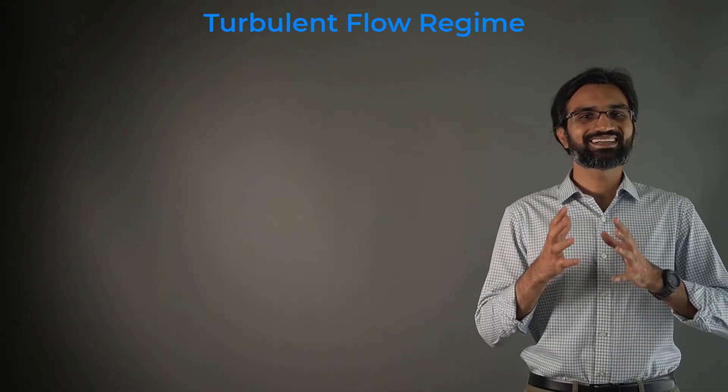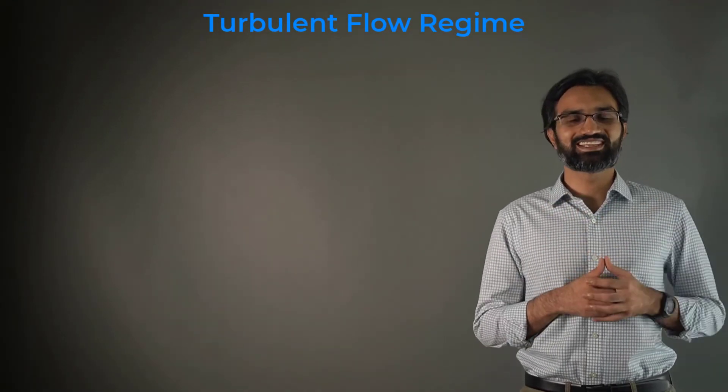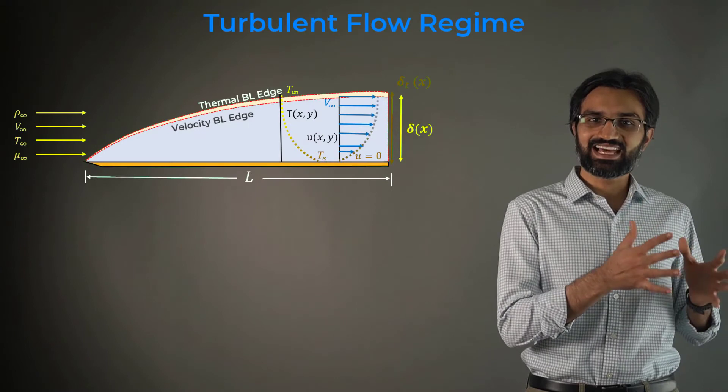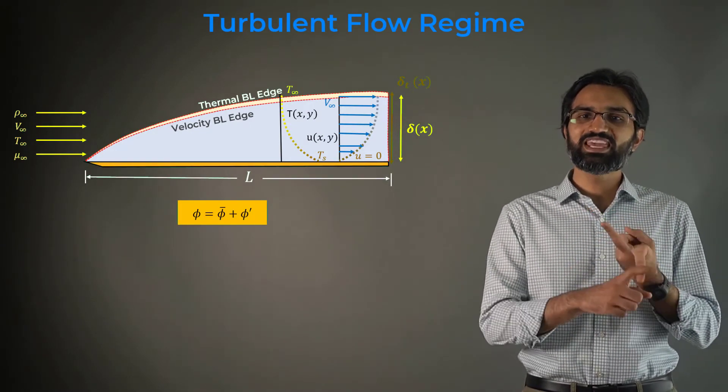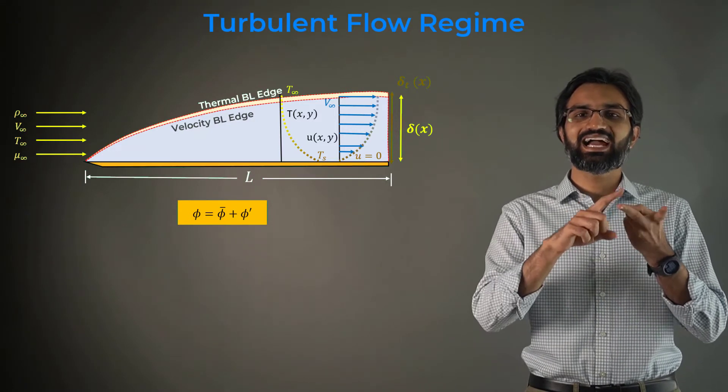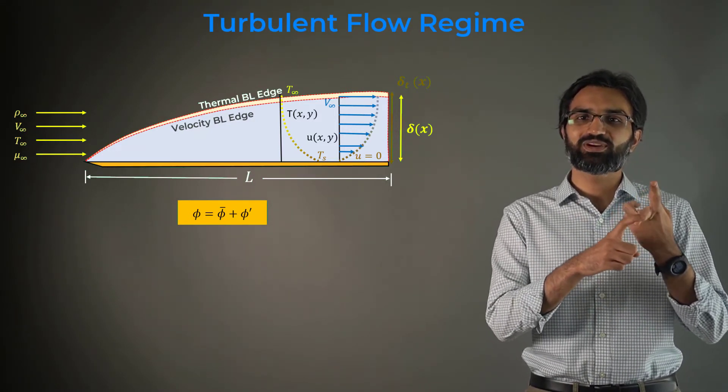Let us now turn our attention to the turbulent boundary layers. Unlike the laminar boundary layer flow, the turbulent flow variables have two components: a mean component phi bar and an instantaneous component phi prime.